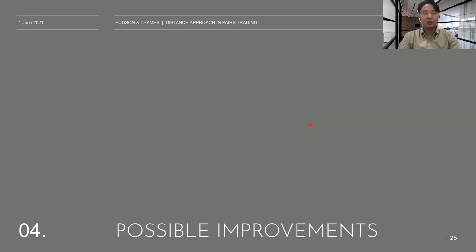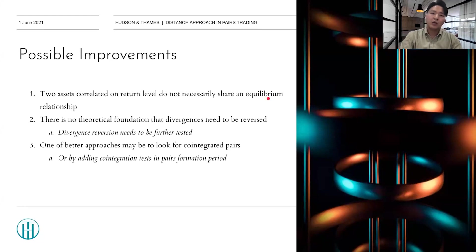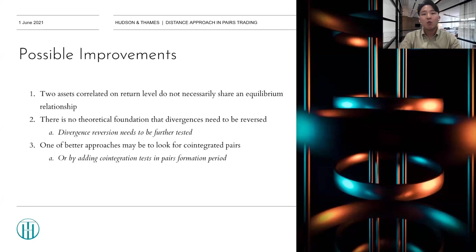However, the Pearson correlation method still has some limitations and room for improvement. Although it uses Pearson correlation, two assets correlated on the return level do not necessarily share an equilibrium relationship, and there is no theoretical foundation that divergences need to be reversed. This could potentially be addressed with the fractal market hypothesis. One of the better approaches may be to look for co-integrated pairs or add co-integration tests during the pairs formation period — which I mentioned during the Q&A session. There is also a co-integration module in ARBlet that you may check out.